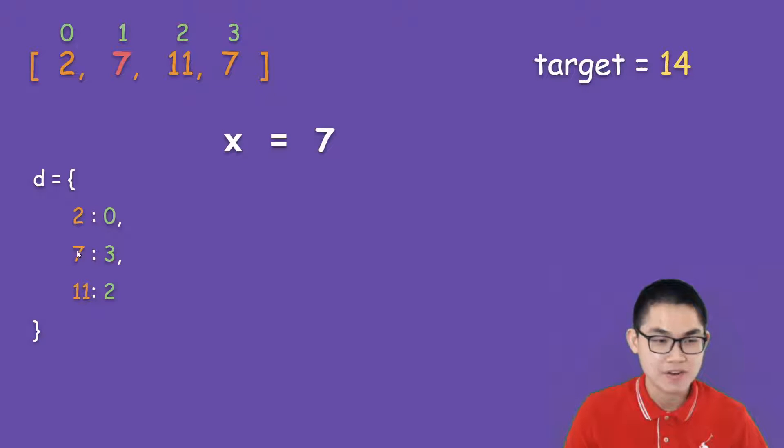Yes, we have number 7 right here. So what does that mean? That means this 7 at index 1 plus this 7 at index 3 gives you 14. So all we have to do is just return the indices 1 and 3.